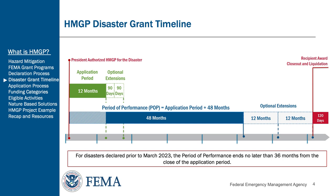At the request of the recipient and subject to FEMA approval, the FEMA Region can issue up to two 12-month extensions to the period of performance. The recipient's request must include a specific and compelling justification for why the extension is required. After project completion, the subrecipient has 90 days to submit all financial, performance, and other reports that make up the closeout documents. Then the recipient has 120 days after the period of performance ends to submit the closeout request package to FEMA.